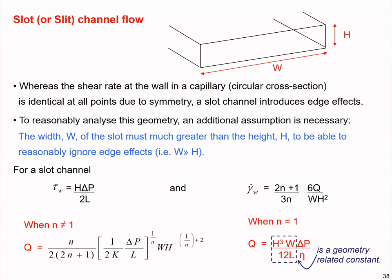In the previous equation we had the same format. For example, a triangular cross section would give a different constant, but still with delta P over eta. These are the two types of channels I would like you to understand in this lesson; we will not look at any other channel geometries.